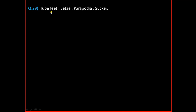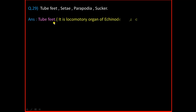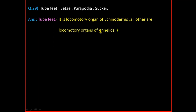Question Number 29: Tube feet, Setae, Parapodium, Sucker. And the answer is Tube feet. Tube feet is a locomotory organ of Echinoderms and all others are locomotory organs of Annelids.